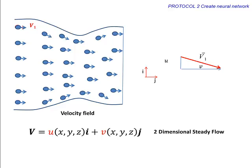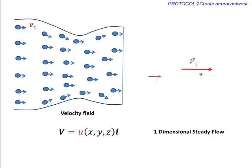If it has time dependence, it is unsteady flow. If the velocity field has only one component and is independent of time, it is called 1-dimensional steady flow. If it has time dependence, it is 1-dimensional unsteady flow.